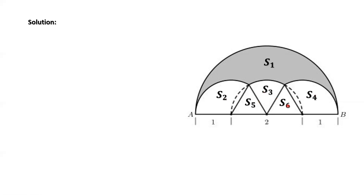We use S for the areas. S1 is the one we need to find. The basic logic is to find the area of this bigger semicircle first, then find the area of each of these five pieces: S2, S3, S4, S5, S6. Then from the area of this bigger semicircle, minus the sum of these five pieces.